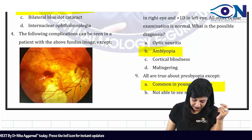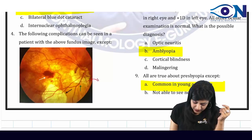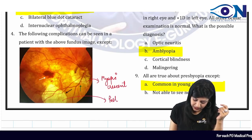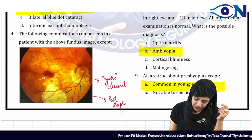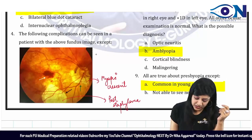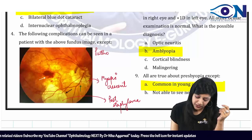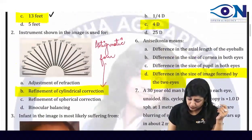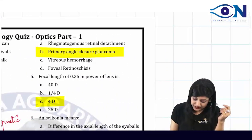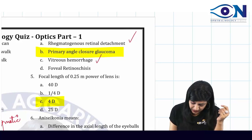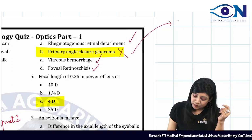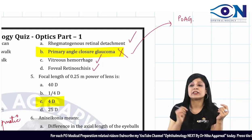Question 4: Looking at the fundus image, we can see a myopic crescent and posterior staphyloma, indicating pathological myopia. Complications include rhegmatogenous retinal detachment, vitreous hemorrhage, and retinoschisis. However, this patient will not have angle-closure glaucoma — they are more likely to have primary open-angle glaucoma, not angle-closure glaucoma.